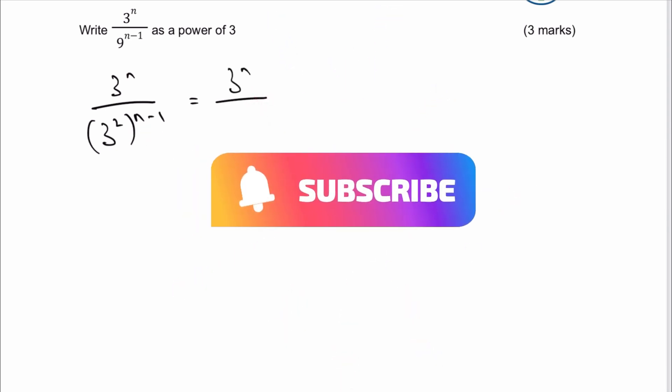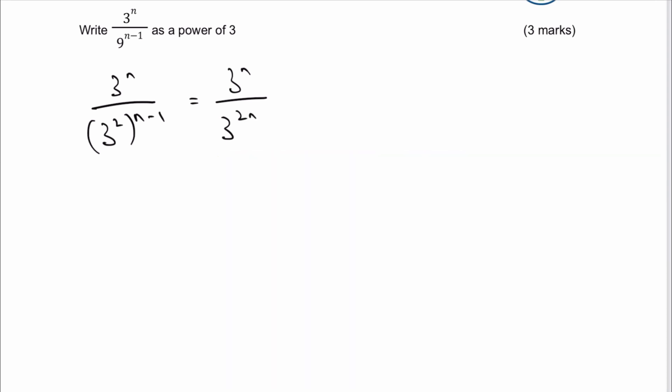3n at the top, and that's going to give us 3 to the power of 2n, and then minus 2. Because if I take that 2 and multiply by the n, and then multiply by the minus 1, that will give me 2n minus 2.